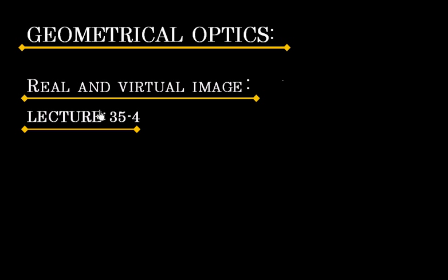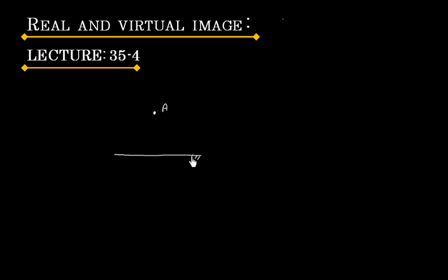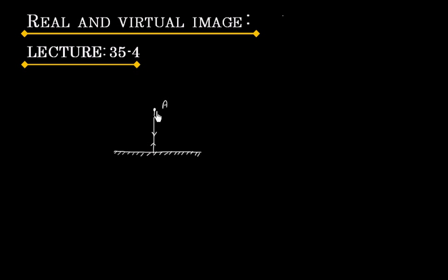In this lecture we will discuss about real and virtual image. Let us consider a case of a plane mirror, and we have an object A here. If I consider a ray that is incident normally on the plane mirror, it will reflect in the same direction — the incident ray and reflected ray will follow the same path.